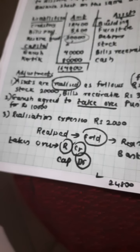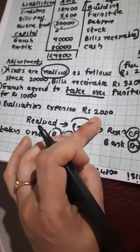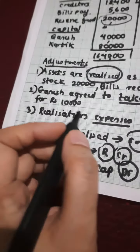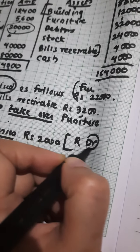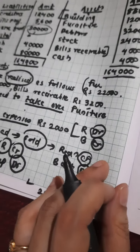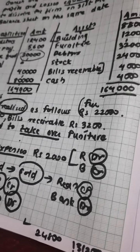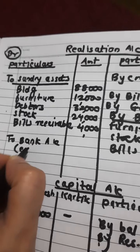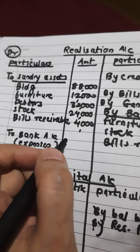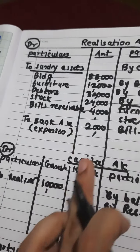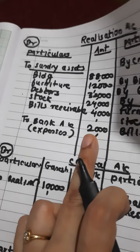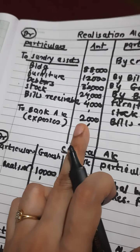Next adjustment: Realization expenses — 2,000. Expenses paid. Whenever expenses are paid, the effect is: Realization debit and Bank credit. Memorize all these effects. Realization debit, Bank credit — 2,000. So I am writing here: Realization debit. The heading will be 'To Bank Account' — write in brackets: Expenses, or you can write 'Realization Expenses' — 2,000. And the second effect goes to Bank account credit side — 2,000. One is debit, another is credit. This principle continues.